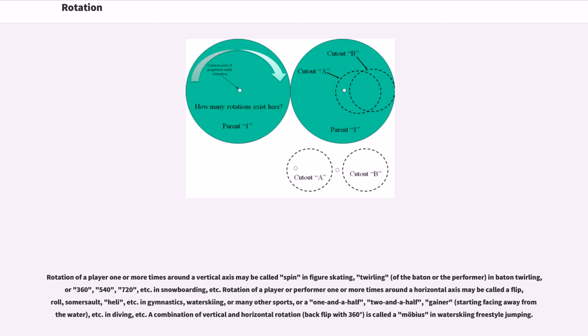Rotation of a player or performer one or more times around a horizontal axis may be called a flip, roll, somersault, heli, etc. in gymnastics, water skiing, or many other sports, or a one and a half, two and a half, gainer, etc. in diving. A combination of vertical and horizontal rotation is called a Mobius in water skiing freestyle jumping.